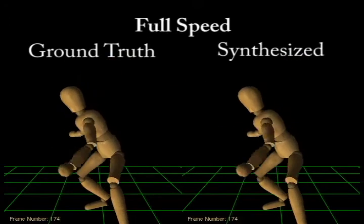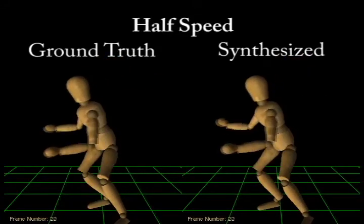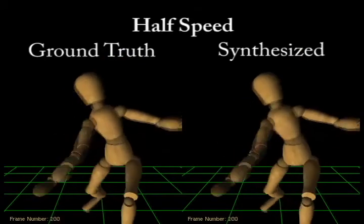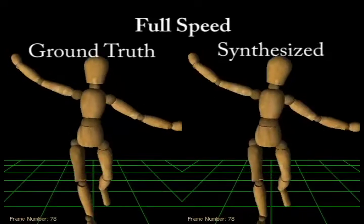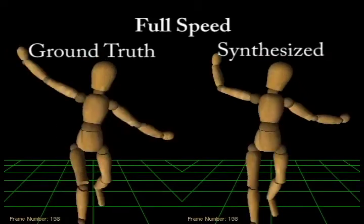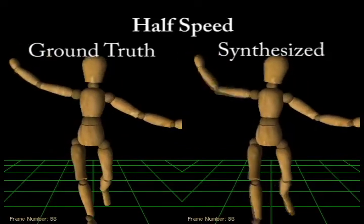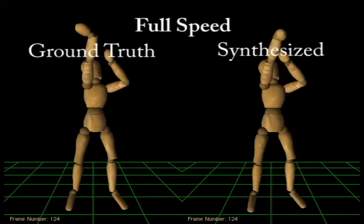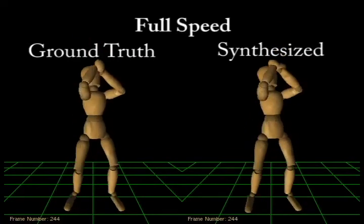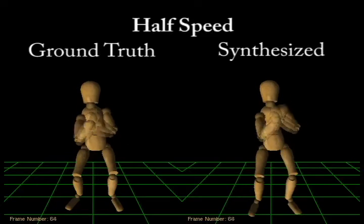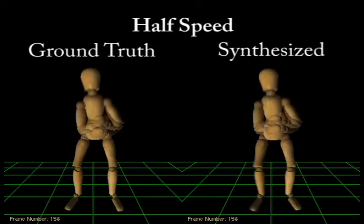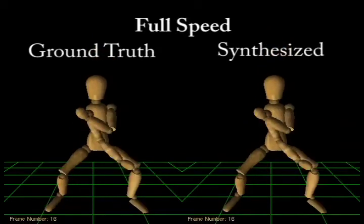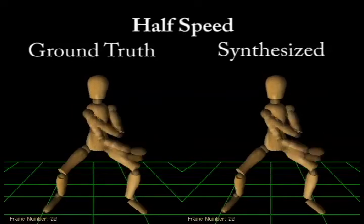This video shows a comparison between the synthesized tennis forehand swing and the ground truth. Side-by-side comparison between the tennis backhand swing and the ground truth. The comparison between a basketball shot and the ground truth basketball shot. Comparison between a karate middle block and the ground truth.